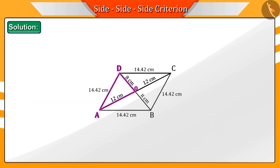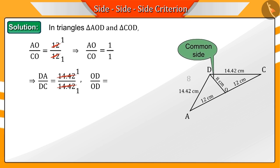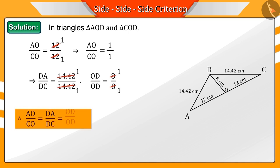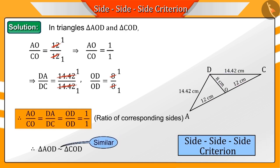Now, if we consider triangles AOB and COD, the ratios of their corresponding sides are also equal. Hence, triangles AOB and COD are also similar by the SSS criterion.